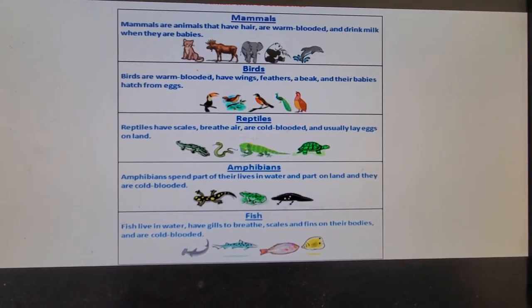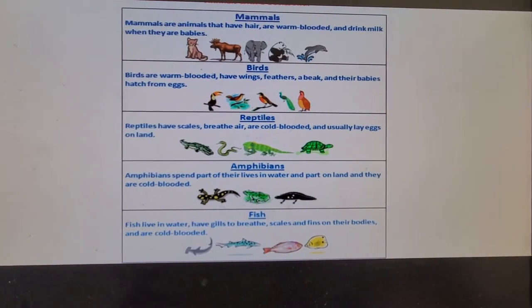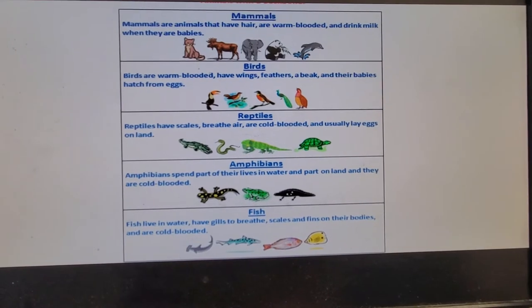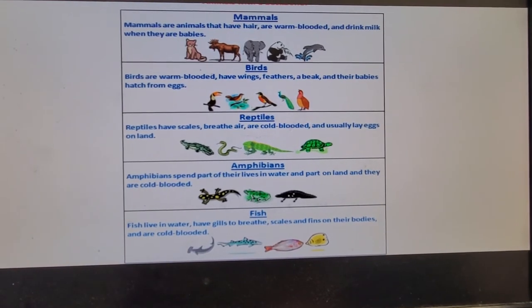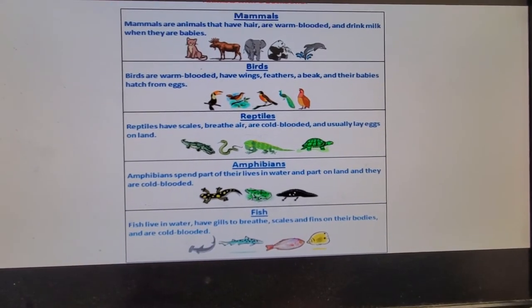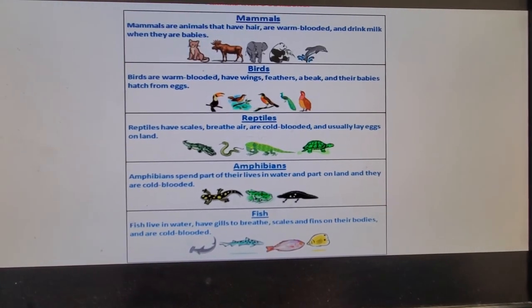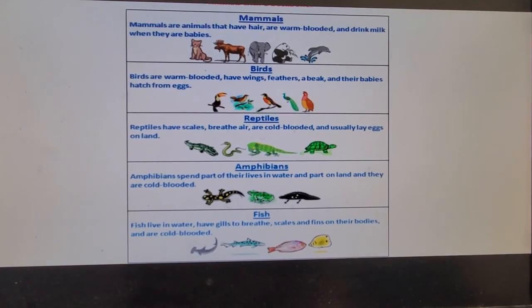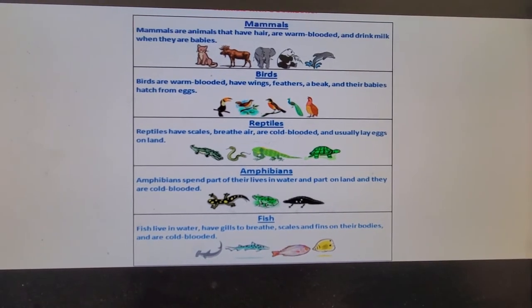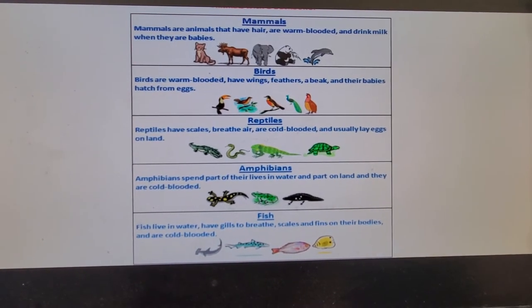Our major groups of vertebrates are fish, amphibians, reptiles, birds, and mammals, as you see here on the screen. If you look at this diagram you're going to see the major differences that set these groups apart — their characteristics — and that's why they are different and separated this way. Let's talk about some of those differences, and I'm going to use slides so you can see some of the differences through pictures.